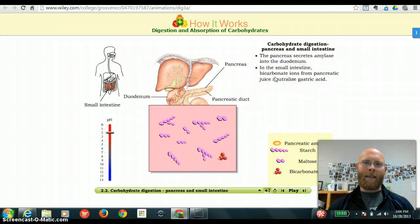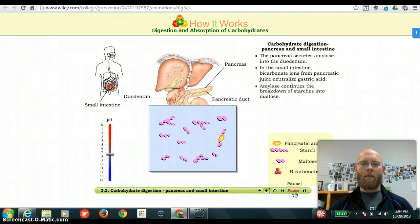So, to me, this is just an amazing thing that your body naturally does. So listen to this: bicarbonate ions from pancreatic juice neutralize gastric acid. Amylase continues the breakdown of starches into maltose. So again, as soon as that stuff hits the small intestine, the pancreas dumps in its pancreatic juices, which contain the amylase enzyme, but also has its bicarbonate molecule, which acts like a chemical buffer, and brings the pH back to normal.